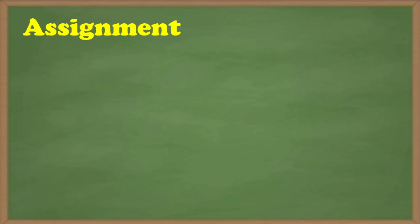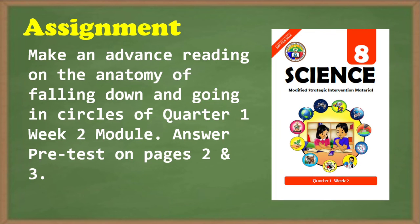Now let's move to your assignment. Make an advanced reading on the anatomy of falling down and going in circles of quarter one, week two module, as you can see on the slide. Answer Pretests on pages two and three.